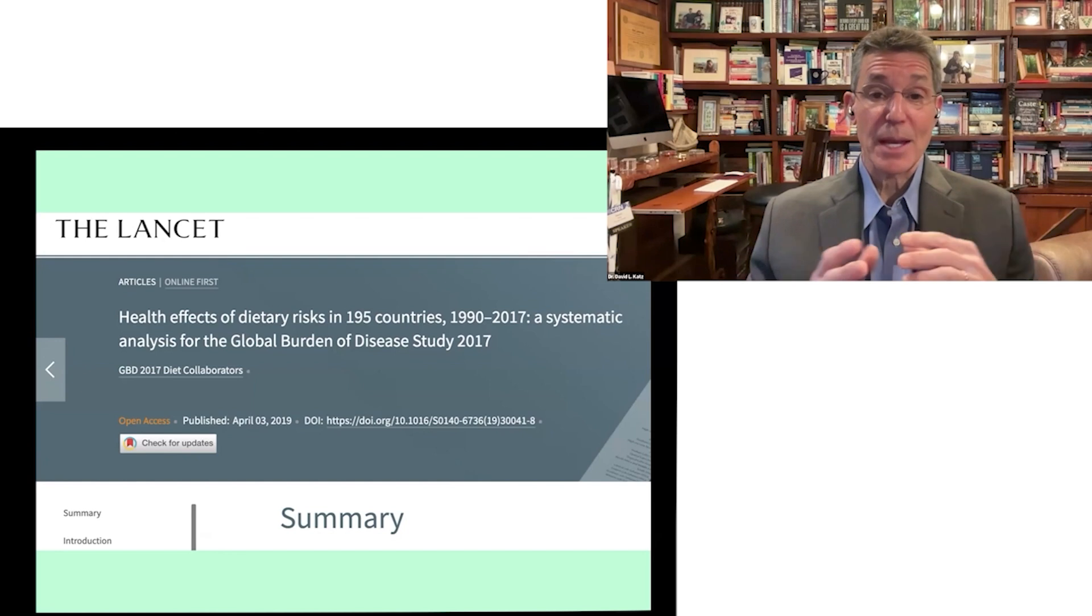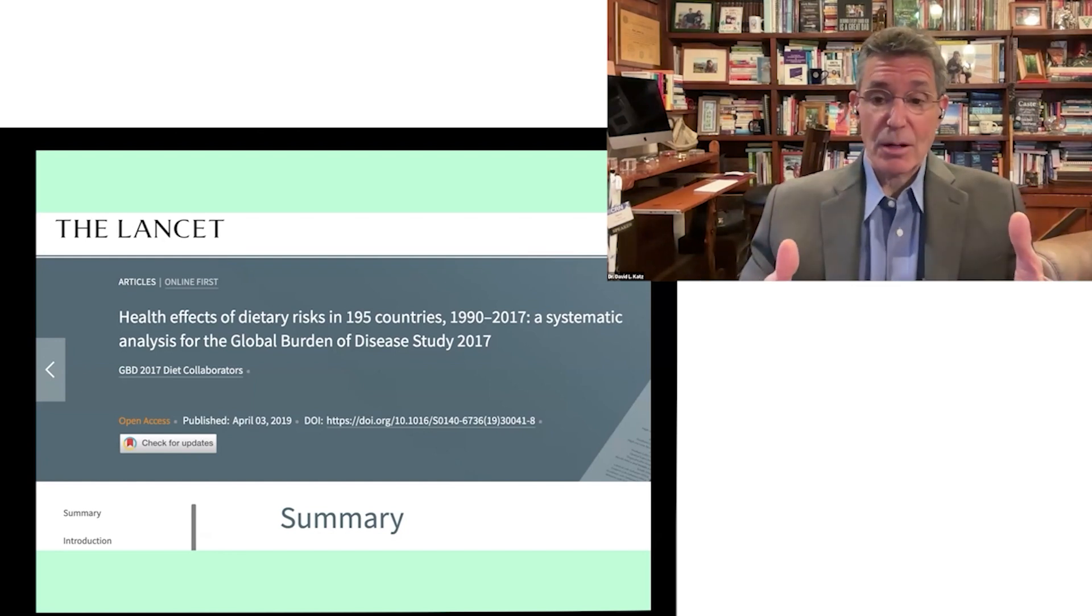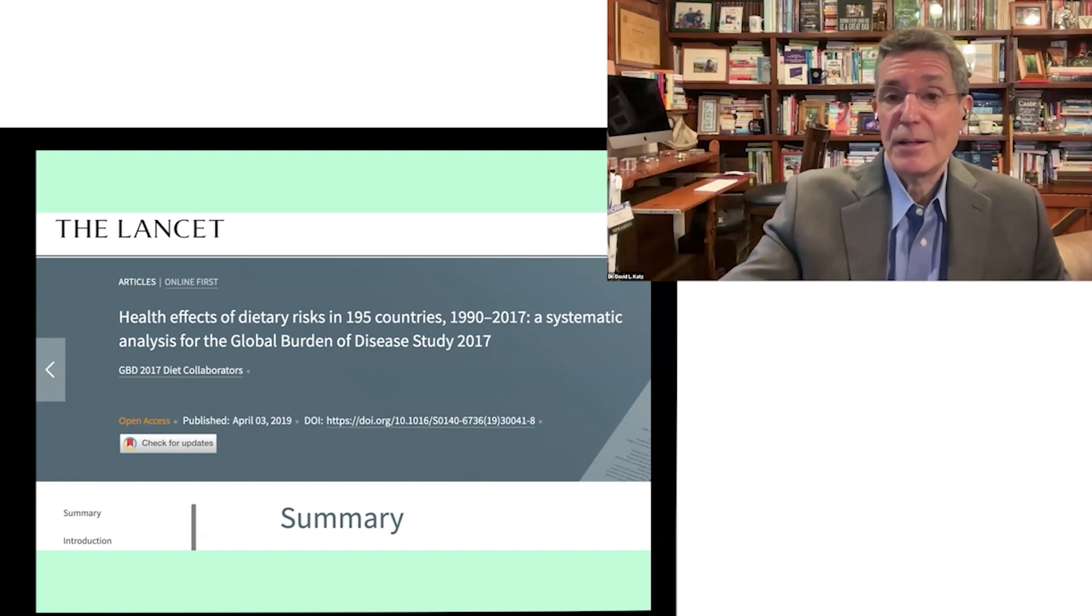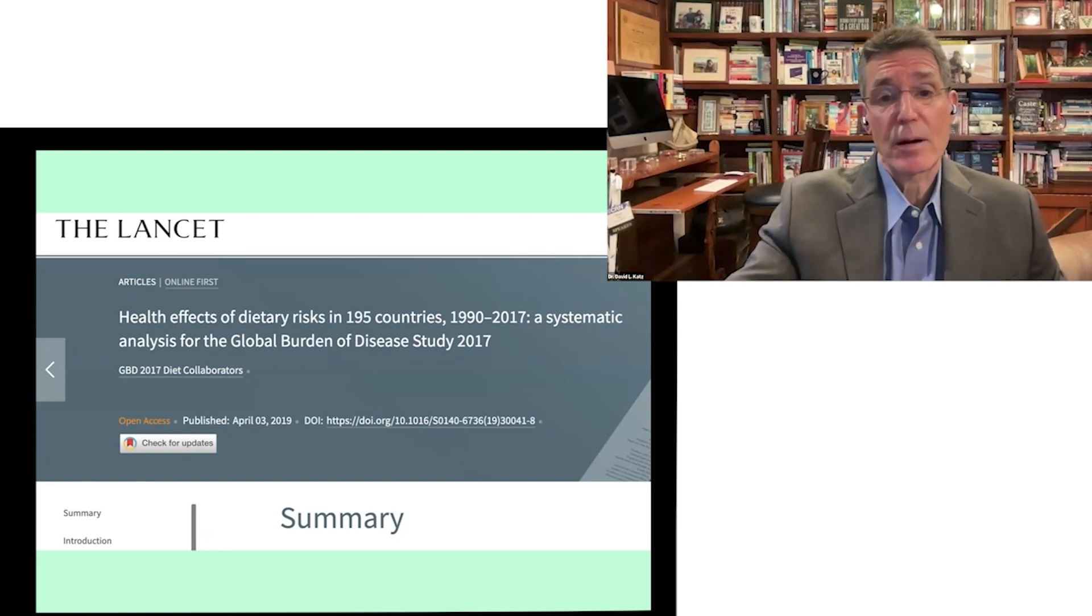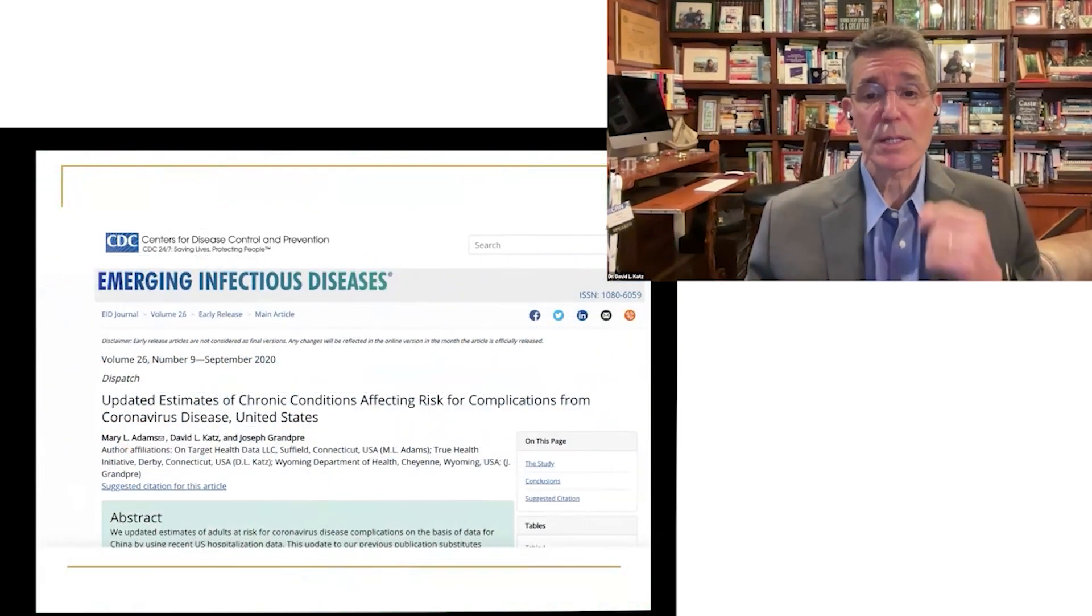Diet quality is the leading predictor variable for premature death and chronic disease. So again, this talk is all about making the evidence-based case where diet is a vital sign. That ought to clinch it right there. You measure these things because they matter. What could matter more than the single leading predictor of premature death and chronic disease?